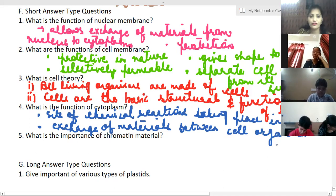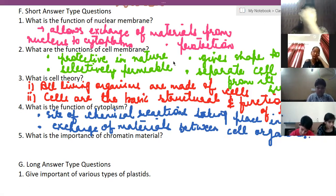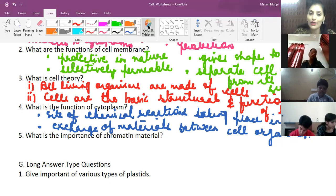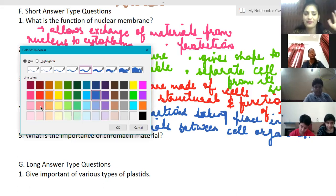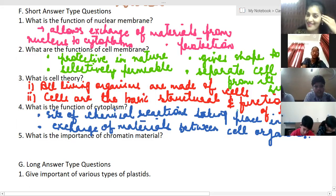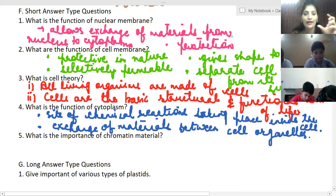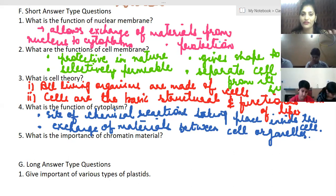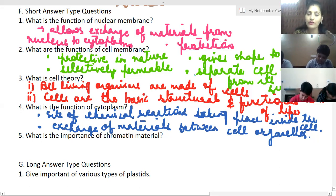Now the last question of this section is what is the importance of chromatin material? Ma'am may I try? Sure, why not. Ma'am it consists of genes which provides the characteristics. Okay, but the main answer is that chromatin has genes. Yes, very good. The chromatin material has genes which are basically the transmission medium of the characteristics from one generation to another. So I am writing this down.